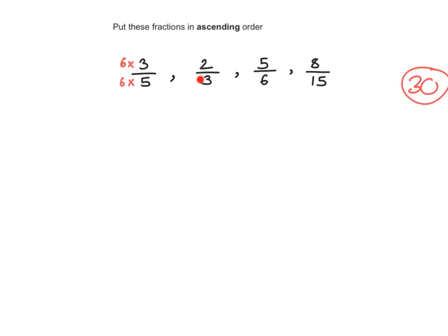Now we go to the second fraction. The denominator here is 3. How do I make 3 into 30? I need to multiply by 10. So I multiply by 10, and I must do the same to the numerator. The next one has denominator 6 — I need to multiply that one by 5, and do the same to the numerator as well.